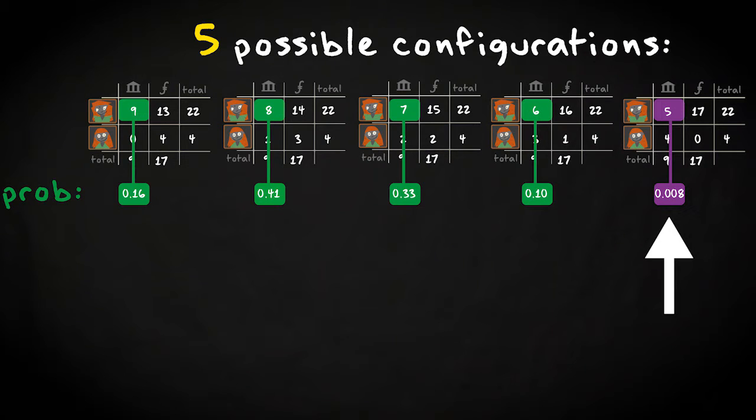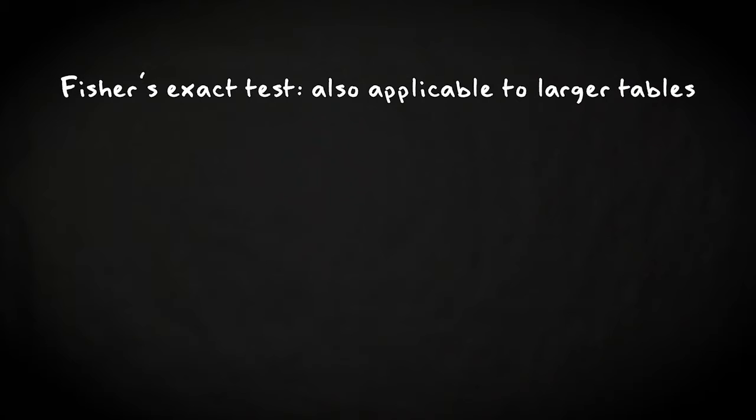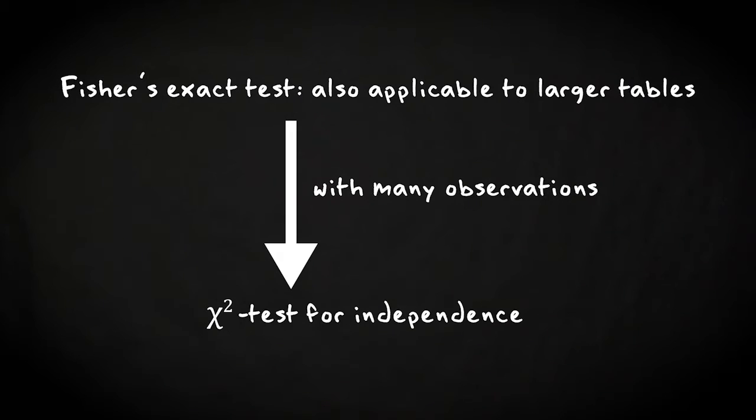As a final note, I would like to mention that the general method for Fisher's exact test can in fact be applied to larger tables. The general approach and the interpretation of the results is exactly the same. However, calculating the probability of a specific configuration gets complex and may also become difficult to compute if sample sizes get too large. But then, in such situations, the data set would meet the requirements for a chi-square test.